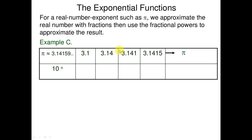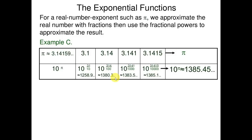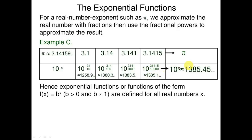We approximate pi with fractions: 3.1, 3.14, 3.141, 3.1415, and so on. In all these cases we can write 10 raised to power pi as a limit of terms like 10 raised to power 31/10, 10 raised to power 314/100, 10 raised to power 3141/1000, and so forth.